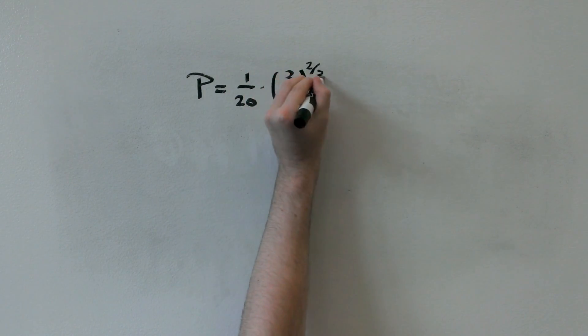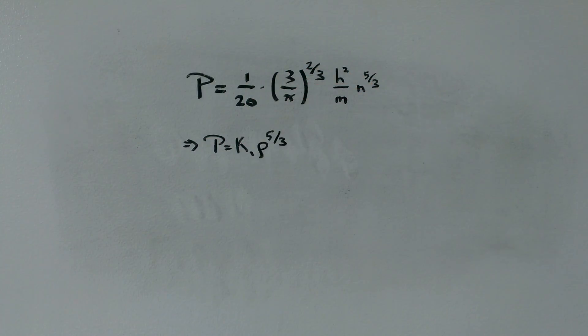Now, we can find the total kinetic energy in a similar fashion as before, but instead of finding an energy relation, we form a pressure relation, again assuming non-relativistic speeds. Here, m is the mass of an electron, n is the number of particles per volume.